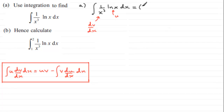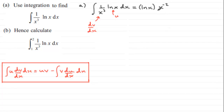Now, v is the integral of the dv/dx part. Thinking of 1 over x cubed as x to the power minus 3, integrating that we add 1 to the power to get x to the power minus 2, and divide by that new power, so divide by minus 2.